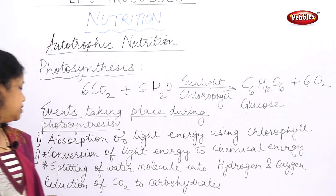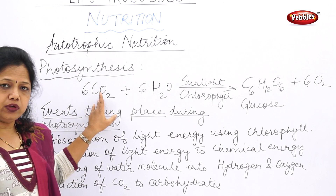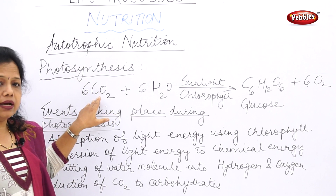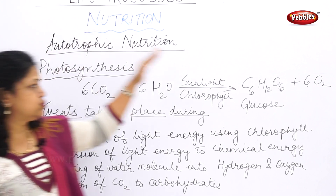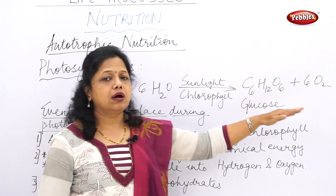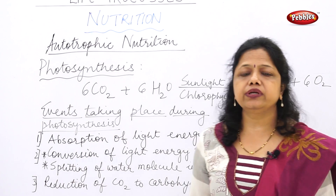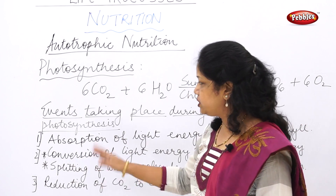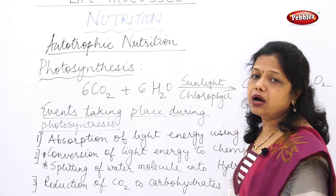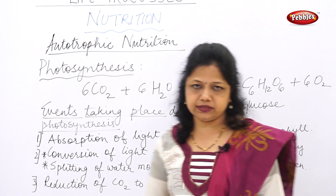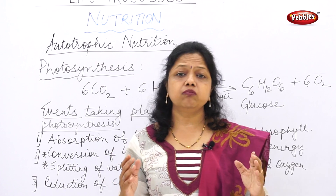The third major event is that carbon dioxide, which was absorbed, has to be reduced to carbohydrates (or starch). So the third event is the reduction of carbon dioxide to carbohydrates. These are the three major events of photosynthesis.